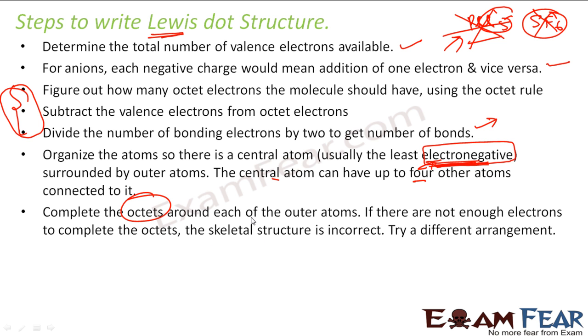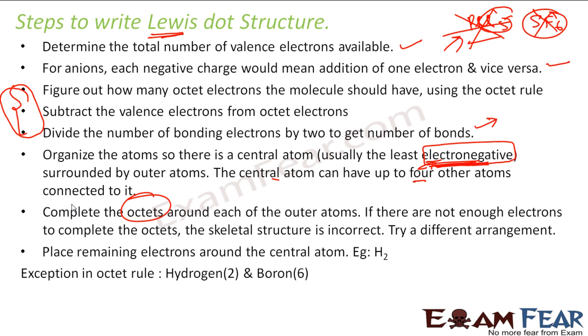If it does not work, you will try a different arrangement and keep doing it till you get the Lewis dot structure. And please note, the exception in the octet rule is, hydrogen needs two electrons in the valence shell to be happy, to be stable. And boron needs six electrons in the valence shell to be happy or stable.